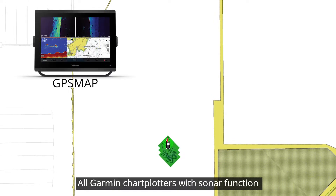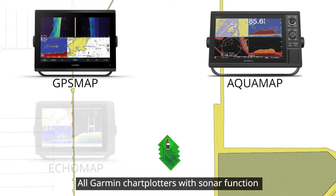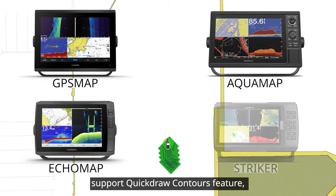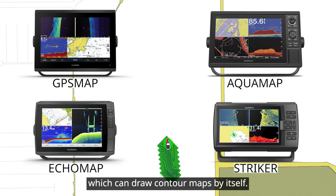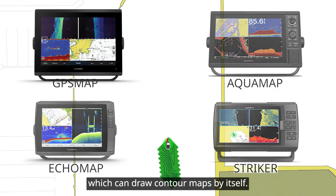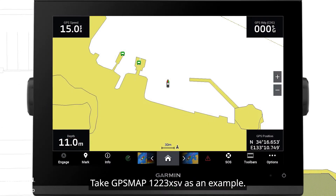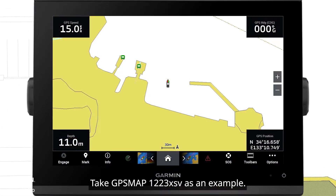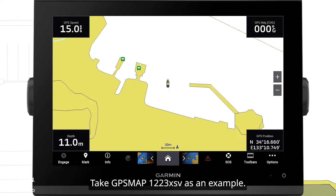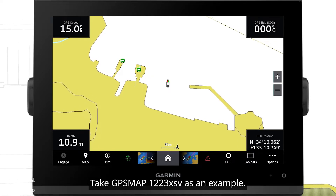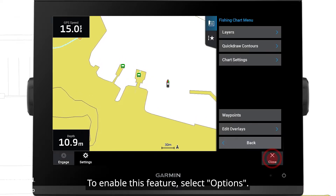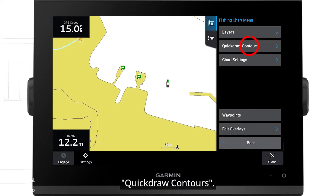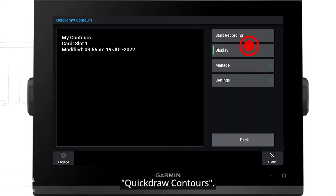All Garmin chartplotters with sonar function support the Quick Draw Contours feature, which can draw contour maps by itself. Take GPS Map 1223XSV as an example. To enable this feature, select Options, then Quick Draw Contours, then Start Recording.